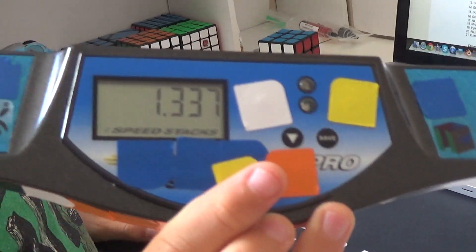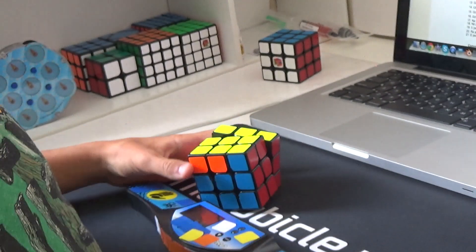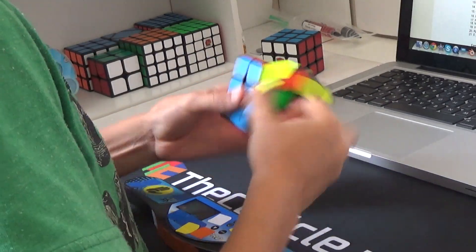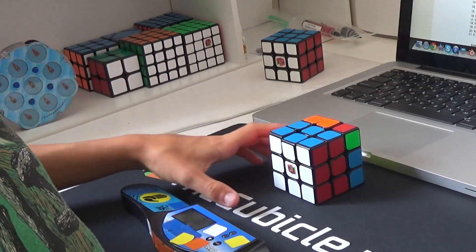1.30. Whoa, 13.37! I just got a 13.37 Z perm. 13.55 Q perm.